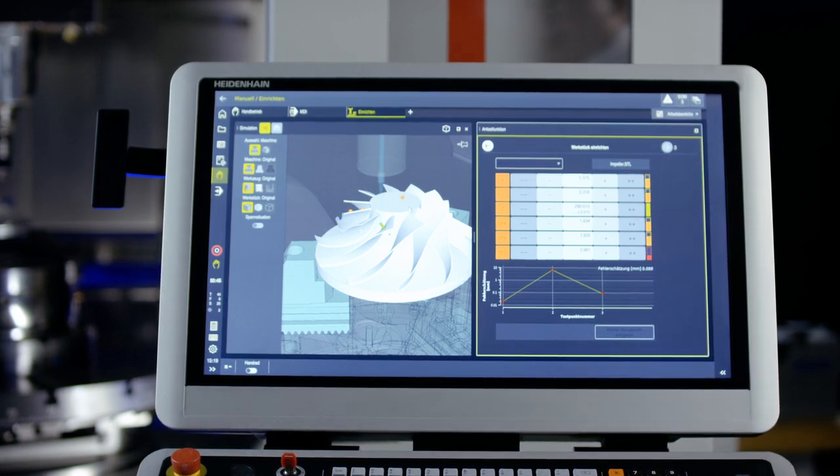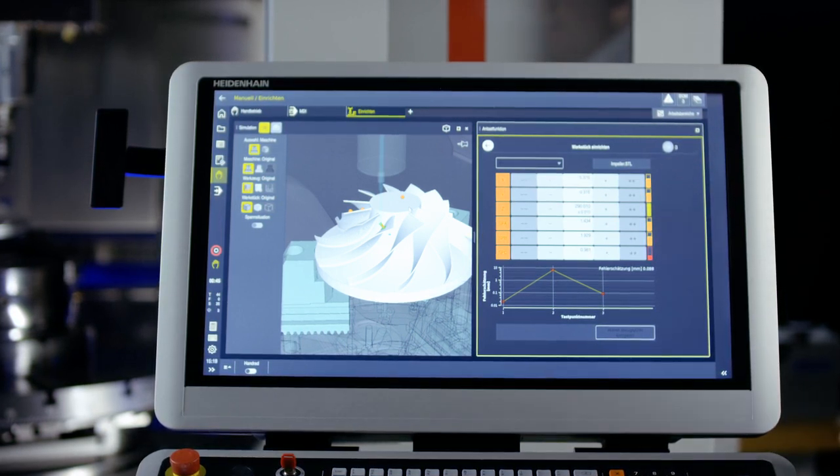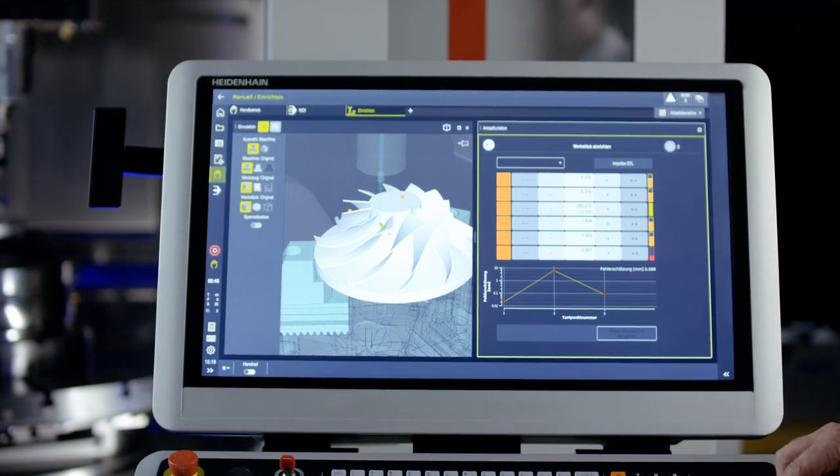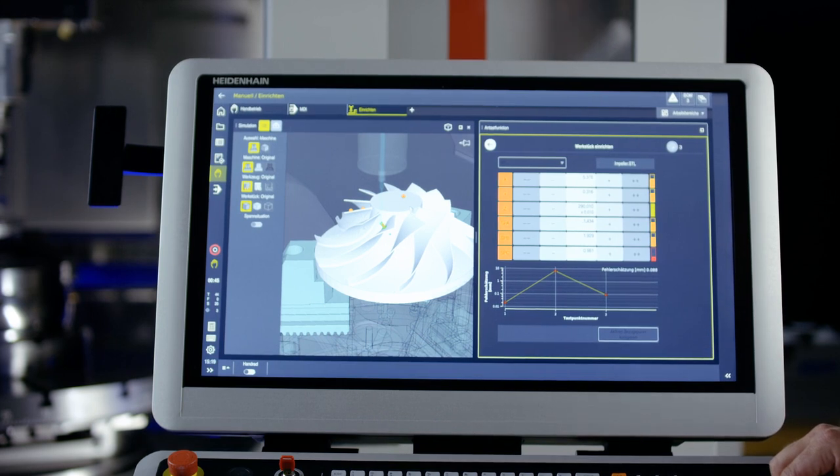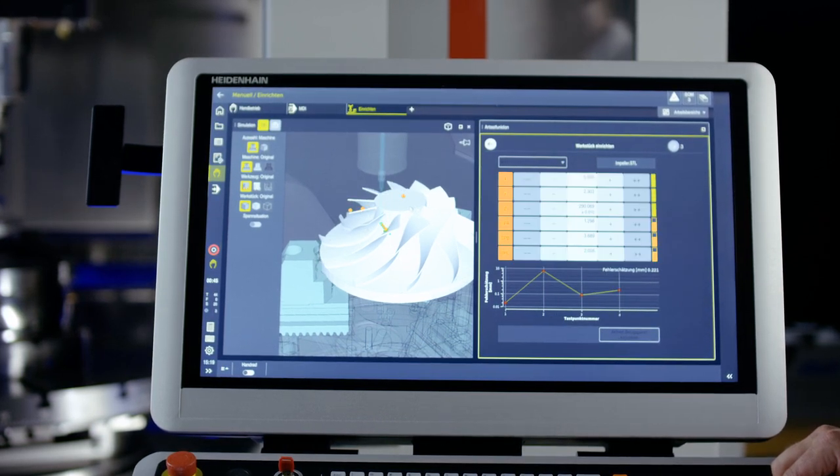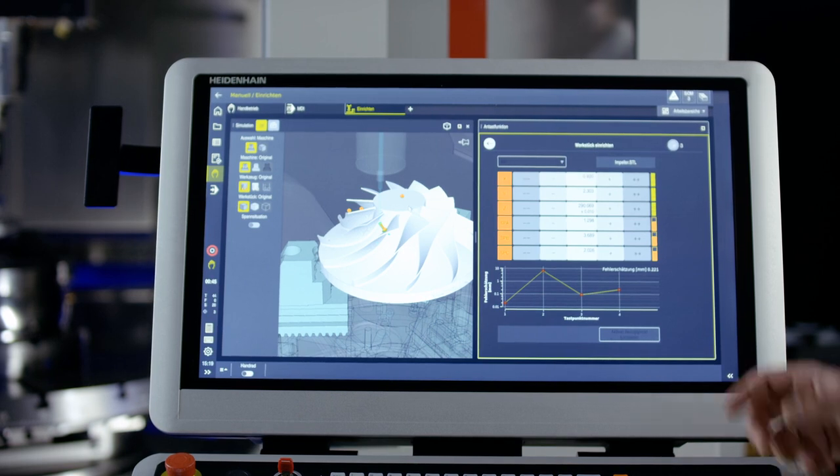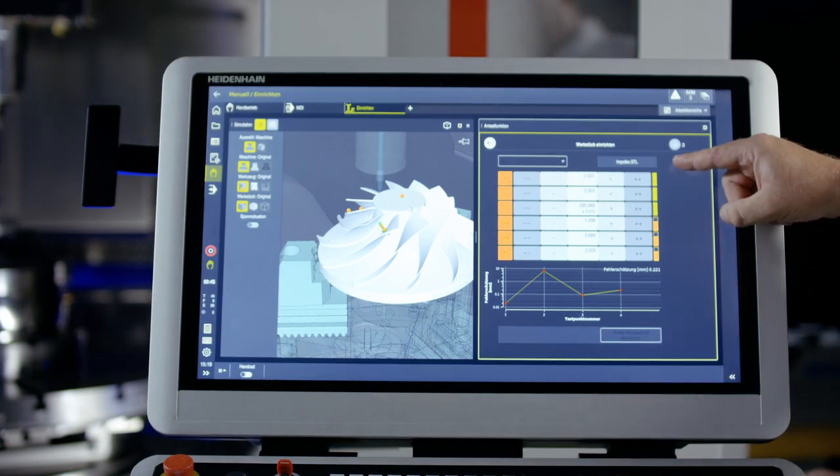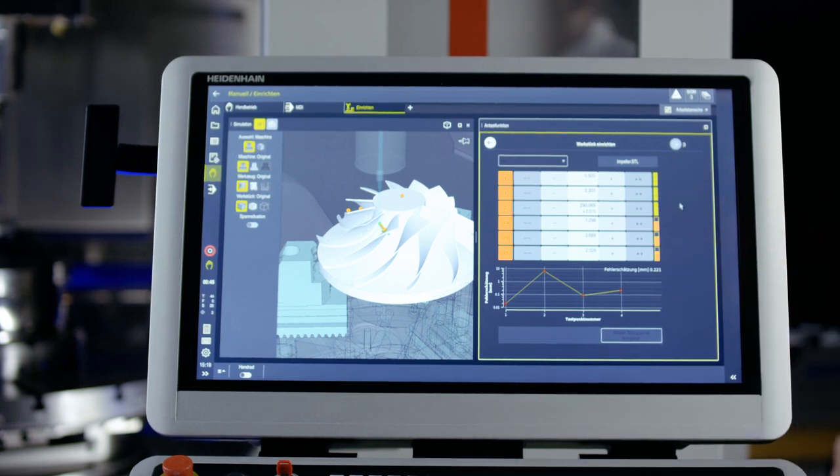We see here that the traffic lights are currently orange and green. We then directly start the next probing point, in order to continue measuring the impeller. We see that the probing points are set, and the presets in X, Y, and Z have been measured.